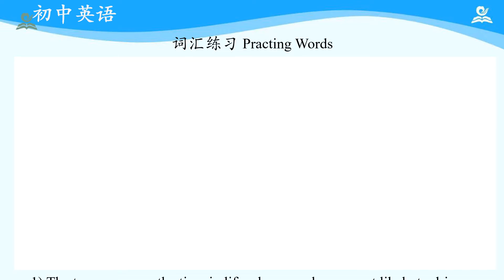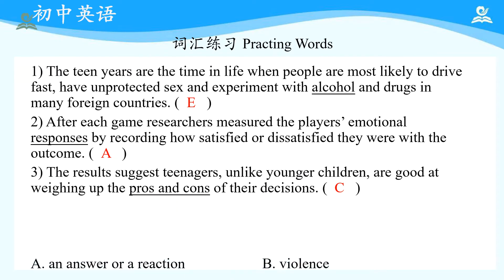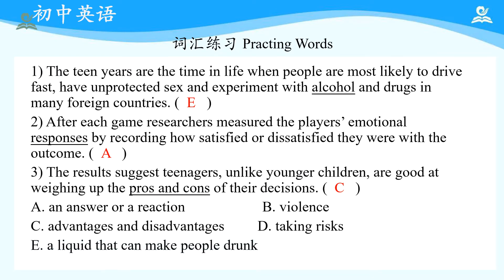接下来进入词汇练习部分。这部分题目的正确答案是EAC。第一个alcohol是指酒精；第二个responses refers to an answer or a reaction；第三个pros and cons对应的是advantages and disadvantages，这也是一个常用短语，比如在debate语境当中，支持观点、反对观点、支持者、反对者，都可以用pros and cons来表达。